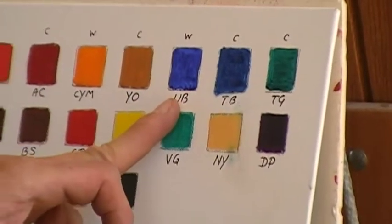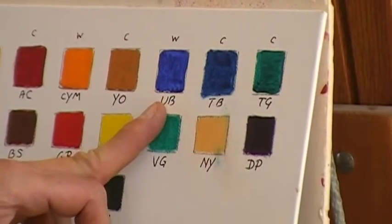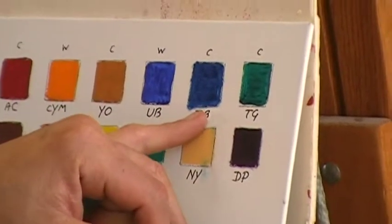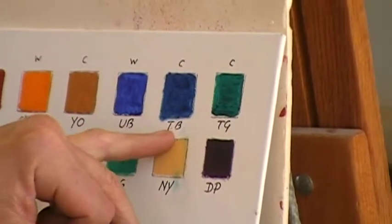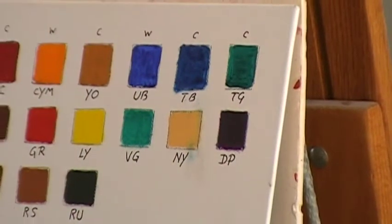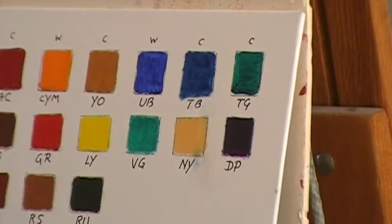For blues we have ultramarine blue, that's the warm blue, it's towards the red, and then for the cool blue we have phthalo blue. This also could have been cobalt blue but I'd rather use phthalo blue because it's pretty much almost the same hue - hue means color.